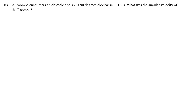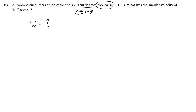Let's do an example problem. A Roomba encounters an obstacle and spins 90 degrees clockwise in 1.2 seconds. What is the angular velocity of the Roomba? So this wants me to find omega, and it gives me a spin of 90 degrees — that's my angular displacement. Clockwise is actually negative and counterclockwise is positive, so this would be negative 90 degrees.